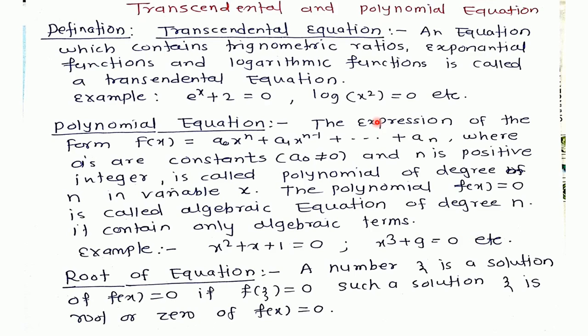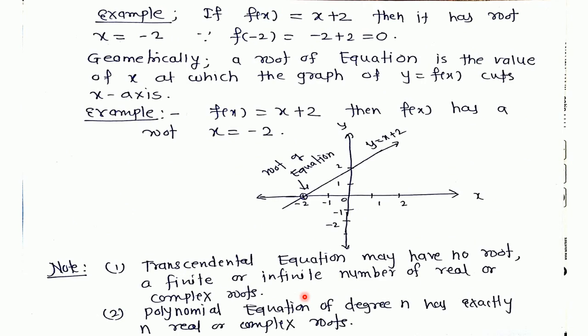After defining transcendental and polynomial equations, our aim is to define the root of an equation. A number ξ is called a root, solution, or zero of the equation f(x) if f(ξ) = 0. That is, if we put x = ξ and get f(ξ) = 0, then ξ is the root. For example, if f(x) = x + 2, then it has root x = -2. Put x = -2, then -2 + 2 = 0. Therefore, -2 is the root.